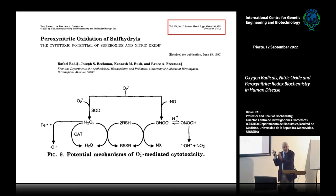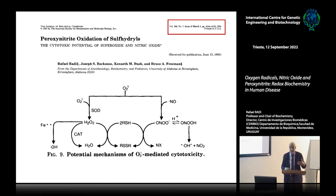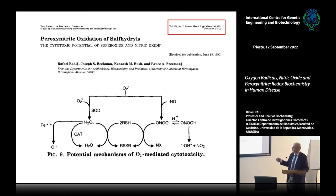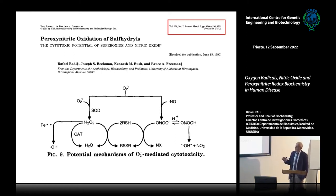Even though this is a primitive scheme when seen with our eyes today, what we were proposing challenged the common paradigm at the time. The physiologists were really unhappy with the idea that nitric oxide could go through a cytotoxic pathway. We were proposing that superoxide could interact with NO through this chemistry, and we were testing thiol oxidation as an outcome of the reaction.